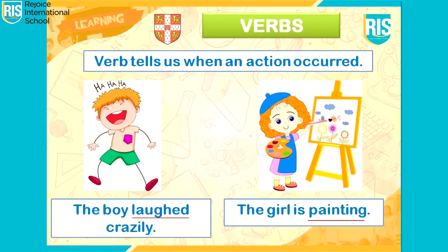A verb also tells us when the action occurred. Let's understand this with the help of examples. Observe the first picture — it says the boy laughed crazily. Here, 'laughed' is a verb and tells us that he is not laughing right now but has already laughed before. The second picture says the girl is painting. Here, 'painting' is a verb and tells us that she is painting right now.